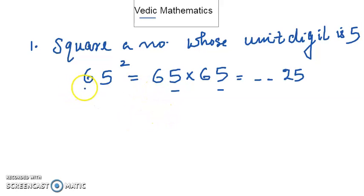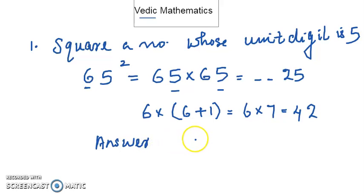That is this number 6, that is 6 into 6 plus 1. We multiply 6 into 6 plus 1 is 6 into 7, that is 42. So the answer - the first two digits are 42 and the last two digits are 25.